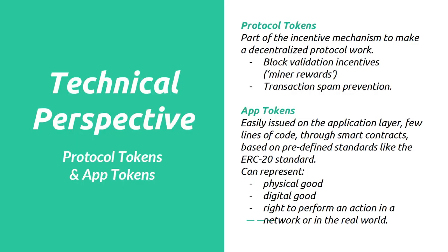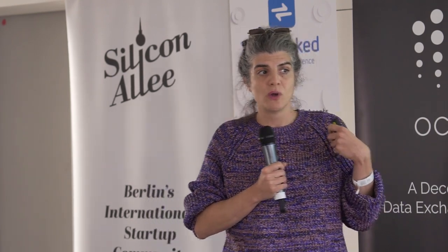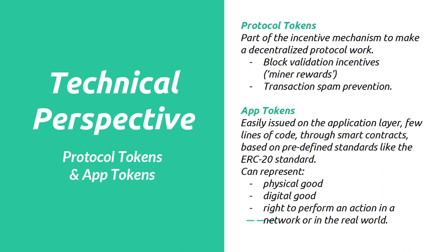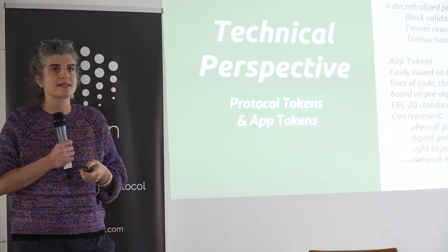From a technical perspective we have protocol tokens and application tokens. Thanks to Fabian and the standards, it has become very easy to create tokens. Protocol tokens have sophisticated crypto economics behind them - we know whether they work once deployed. With application tokens, it's become very easy to create your own token with a few lines of code. That token can represent a physical good, a digital good, a right to perform an action within the network, and very often it's hybrid.